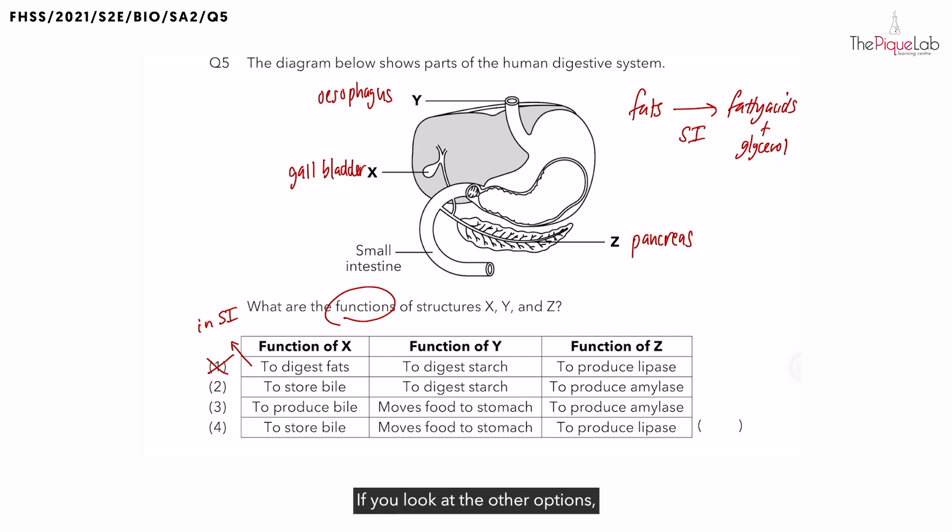If you look at the other options, all are related to bile. What is bile? Is it an enzyme? Bile is not an enzyme. Remember, all the enzymes that you learn in digestive systems, they all end with ASE. So what does bile do? Bile helps to emulsify fats. Let's write that down.